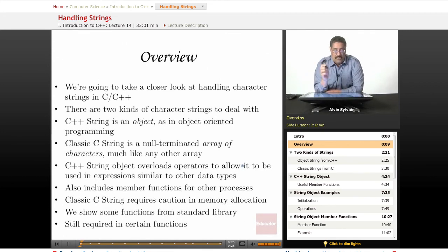There are two kinds of character strings that you need to deal with in C++. There's the string object, an object such as object-oriented, which has its own attributes and its own methods, its own access functions.